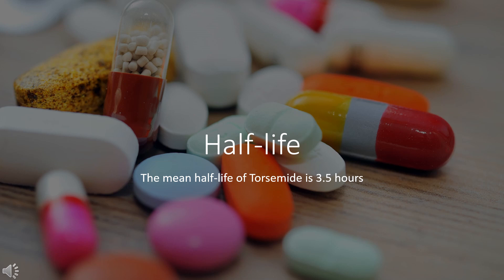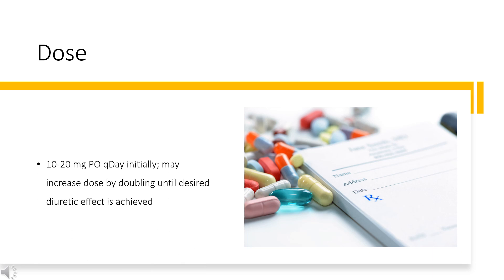Half-life: The average half-life of torsemide is 3.5 hours. Dosing for edema — heart failure or renal disease: 10–20 mg orally once daily initially, with the dose doubled until the desired diuretic effect is achieved. Doses greater than 200 mg have not been adequately studied.